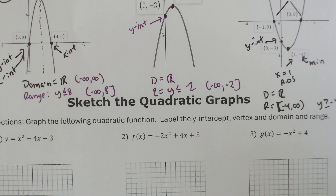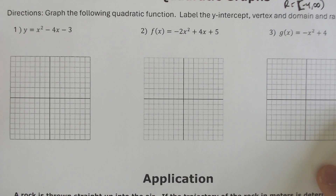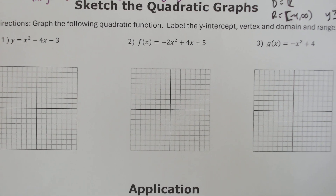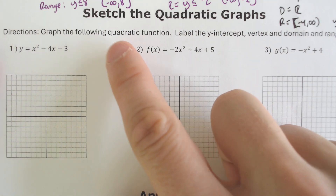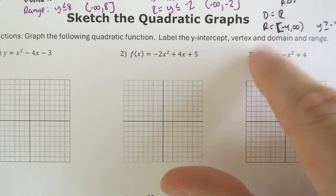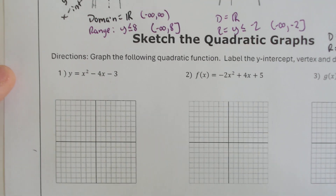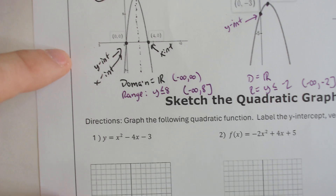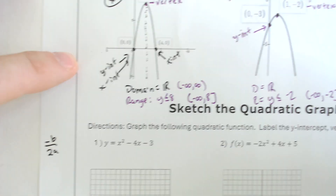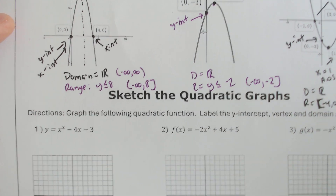That's identifying the parts of a parabola. The next thing we have to do is be able to find it from an equation and graph. We're going to be graphing the following equation, labeling the y-intercept, the vertex, the domain and range, and that sort of stuff. In order to do it, we need to use a formula called negative b over 2a — negative b over 2a — which tells you the x-value of the vertex.